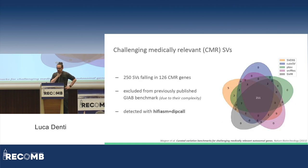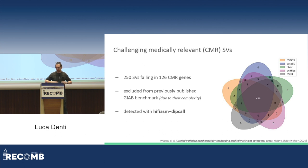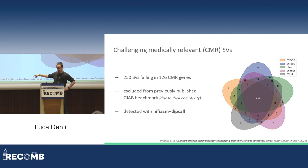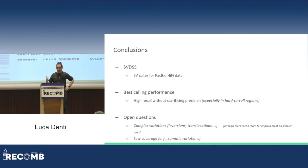Finally, we evaluated the callers on a challenging medically relevant structural variation call set provided by the GIAB, containing 250 structural variations in specific genes. From their paper, these regions were excluded from the previous call set because they were too complex. This was comforting because they detected these structural variations using the same approach — assembly via iFindSM and then DeepCall. From the plot, all callers detected most of the structural variations, but SVDSS found five additional calls — again heterozygous calls that others missed.